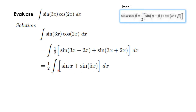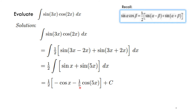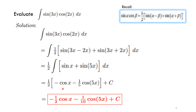We can individually integrate each term. The integral of sin(x) is −cos(x). For sin(5x), using u = 5x and du = 5dx, the integral is −(1/5)cos(5x). Simplifying with the ½ factor, the final answer is −½cos(x) − (1/10)cos(5x) + C.